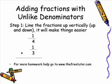Step 1. When adding fractions with unlike denominators, it is best to line them up vertically, or up and down. It will make things easier. As you can see, our math problem of 1 fourth plus 1 third has been lined up. As we proceed through the steps, you will see why this is easier.